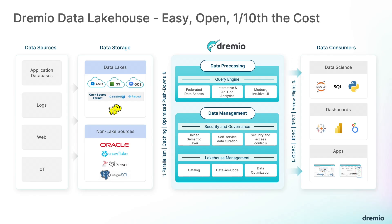Let's bring it all together and see what a modern data lakehouse architecture would look like with Dremio. You have your applications and devices generating and storing data in many different formats and locations on the left side. Looking at the right side of this architecture, Dremio supports many different use cases for data science and BI data consumers. Dremio provides access to any tool through ODBC, JDBC, REST API, and Arrow Flight, which is designed for high-speed data transfer, especially useful for data science use cases.